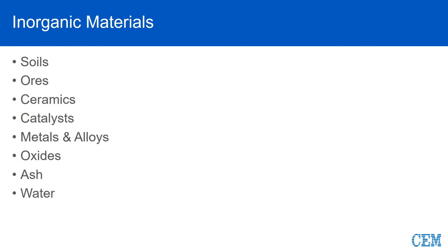We should define what is an inorganic sample matrix. Those would be things like soils, ores, ceramics, catalyst materials, metals and metal alloys, all sorts of oxides, ash from an organic prep, and water — pretty much anything that doesn't have a carbon base. They're digested much differently than organic samples, which we'll cover in a future lecture.